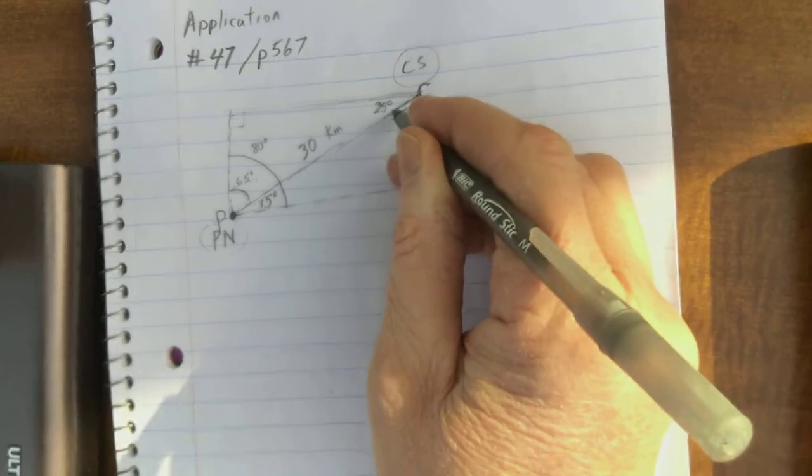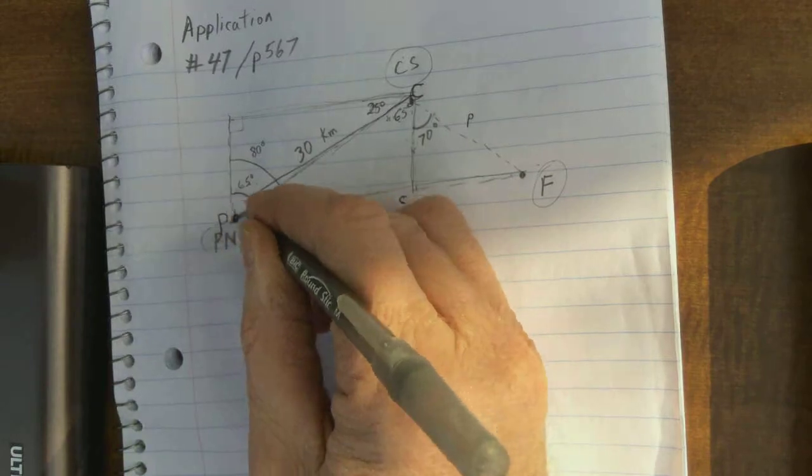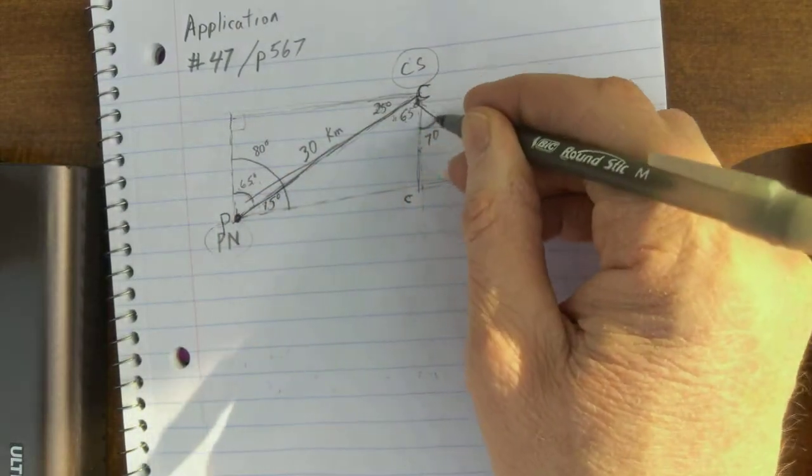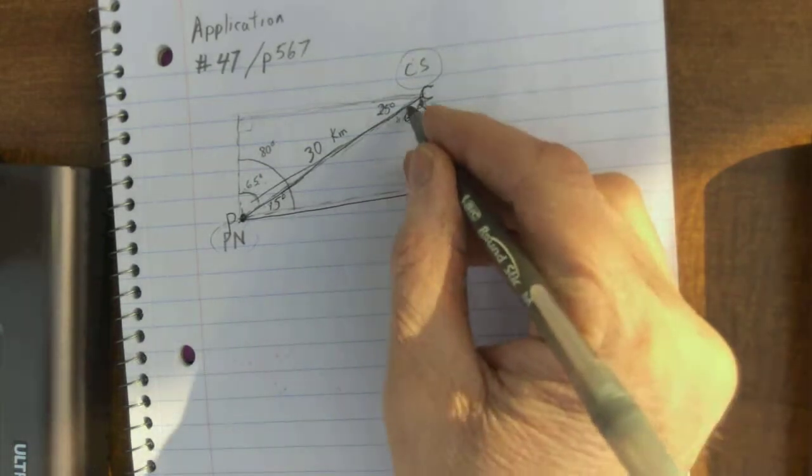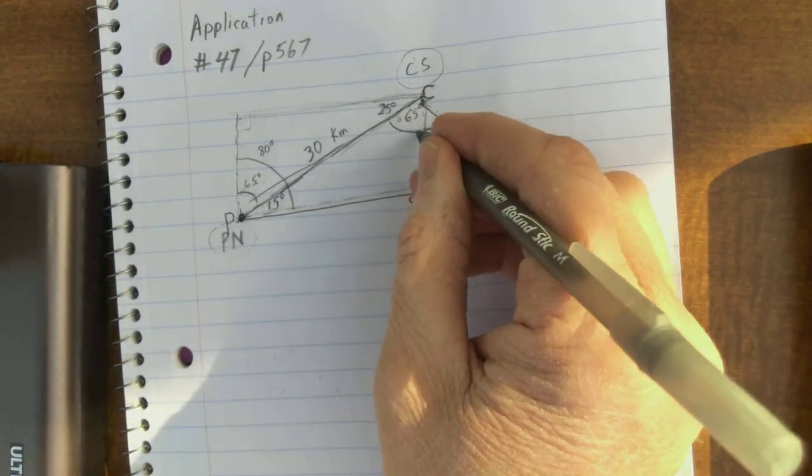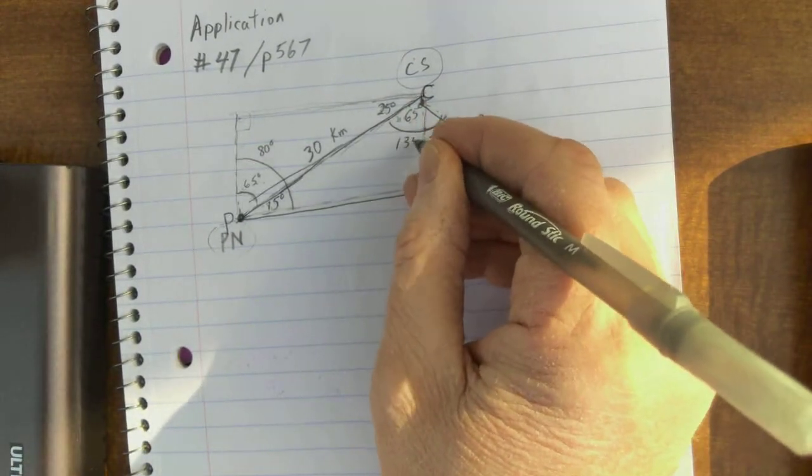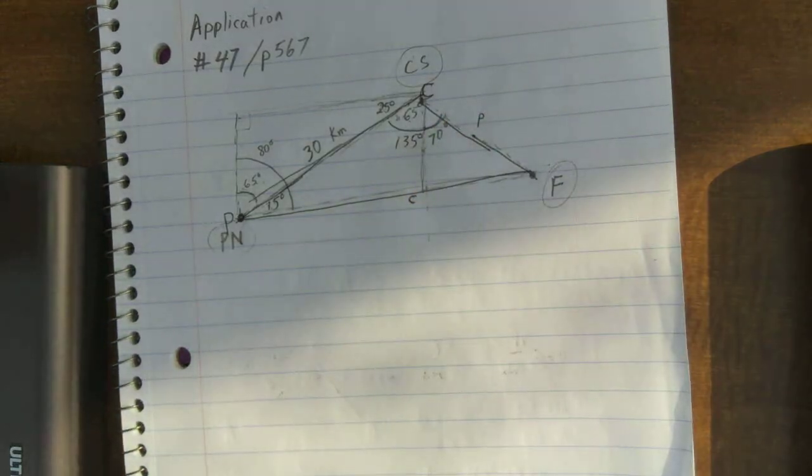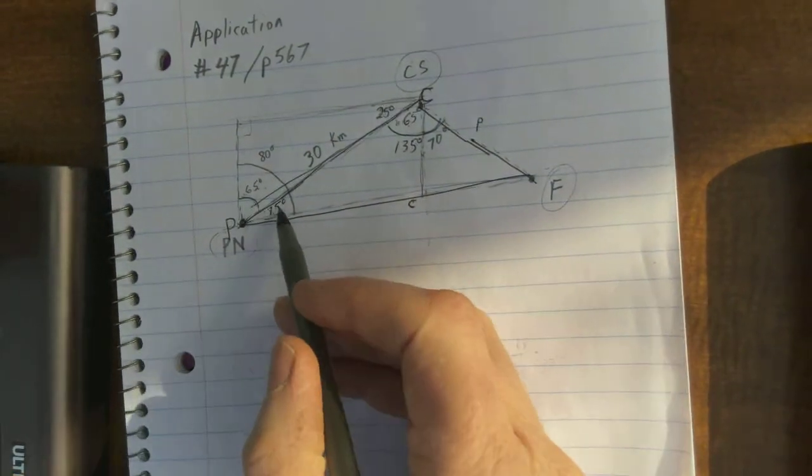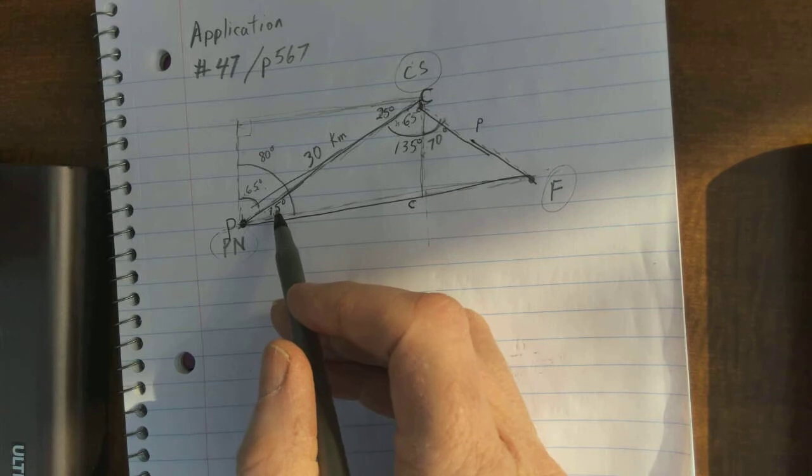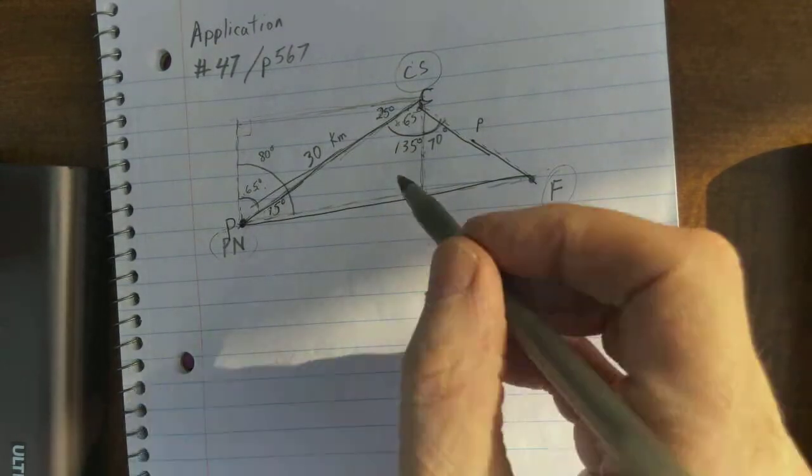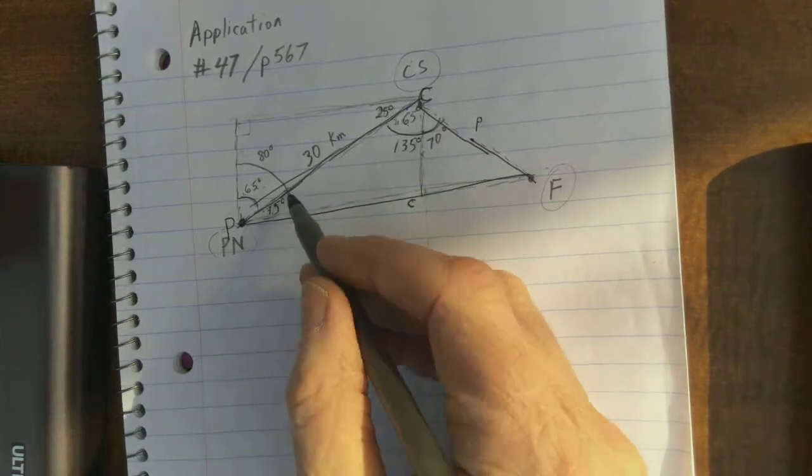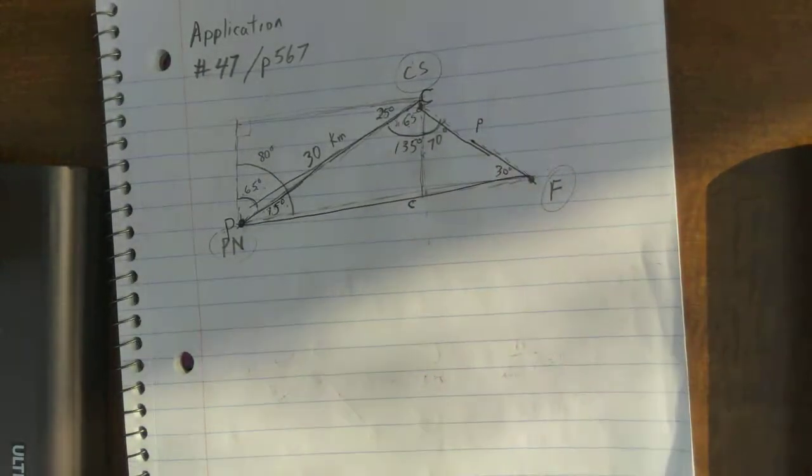with the triangle we're really interested in, this one right here, that we're going to use law of sines for, this 65 and 70, total makes 135 degrees. So, angle c is 135 degrees, angle p is 15 degrees. Now, and that's 150, so this is a 30 degree angle here, if we need it.